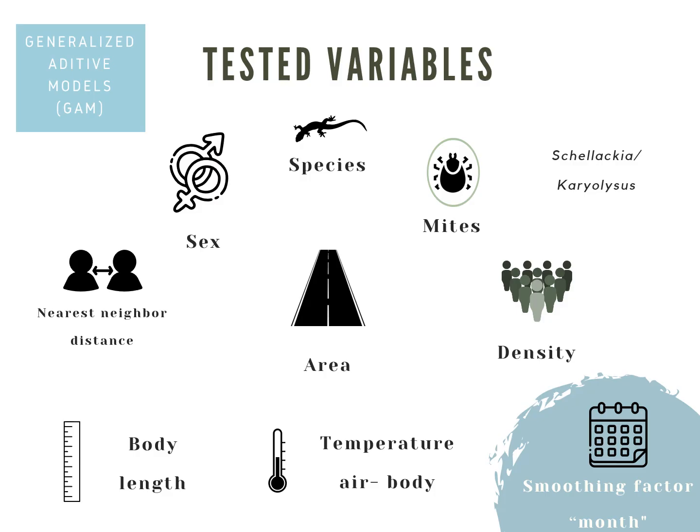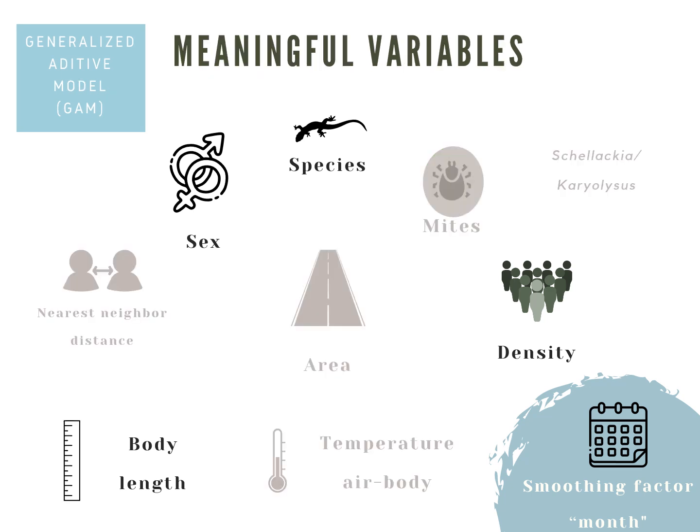We used generalised additive models to analyse a number of variables that could potentially explain the abundance of these parasites in our sample. Out of these, the ones that turned out to have a significant effect in at least one of the analyses were lizard species, sex, body length, and host density, as well as the smoothing factor related with the month as an indicator of phenological effects.